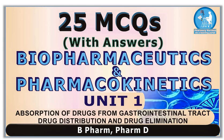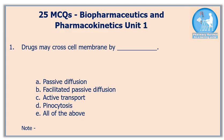Hello guys, this video contains 25 multiple choice questions from the subject Biopharmaceutics and Pharmacokinetics. First question: drugs may cross cell membrane by option A passive diffusion, option B facilitated passive diffusion, option C active transport, option D pinocytosis, and option E all of the above. The correct answer is option E, all of the above.